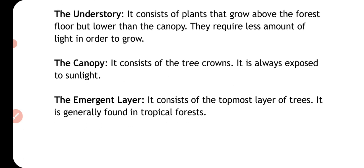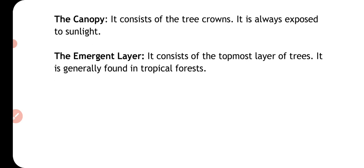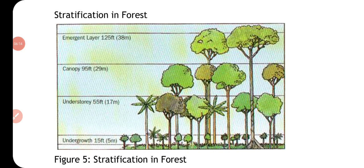Then the understory — it consists of plants that grow above the forest floor but lower than the canopy, and it needs light to grow. Next is the canopy — the crown of the trees exposed to light. Then the emergent layer, which consists of the topmost layer of trees and is generally found in tropical forests.